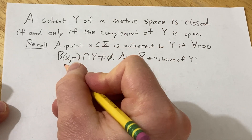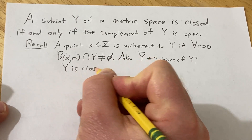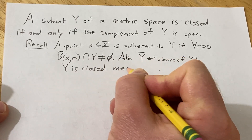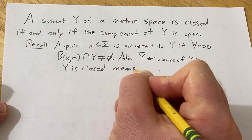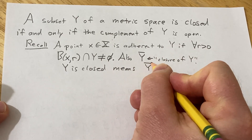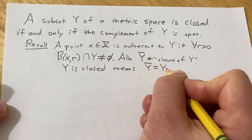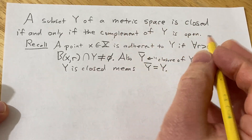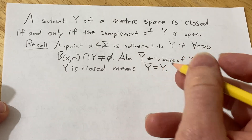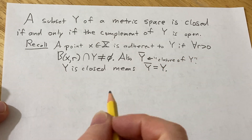We say that Y is closed, and this means that the closure of Y is equal to Y. So now we are going to do this proof.